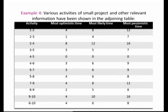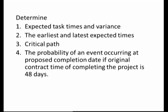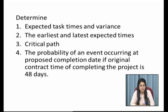Let us look at an example. The various activities of a small project and other relevant information are shown in the adjoining table, with activities 1 to 10 as shown in the figure. The questions ask us to: make a network, determine the expected task times and variances, find the earliest and latest expected times, identify the critical path, and find the probability of completion if the original contract time is 48 days.